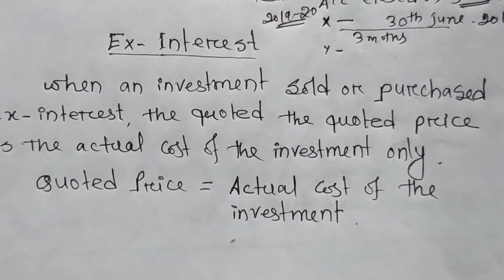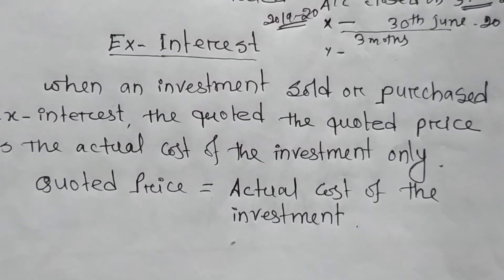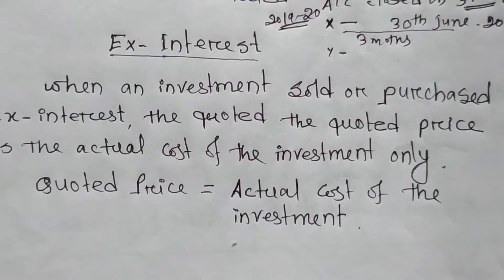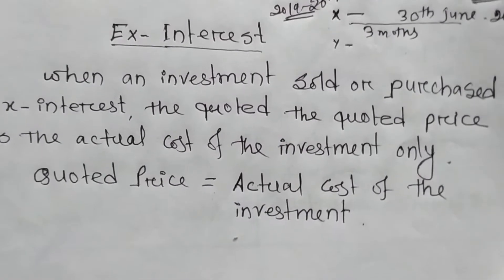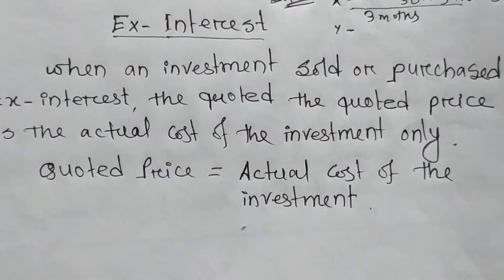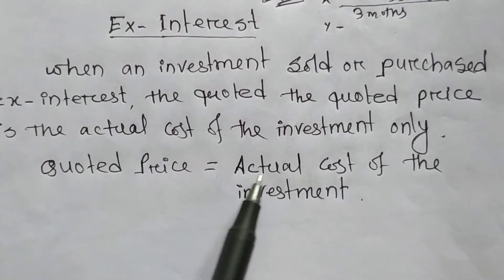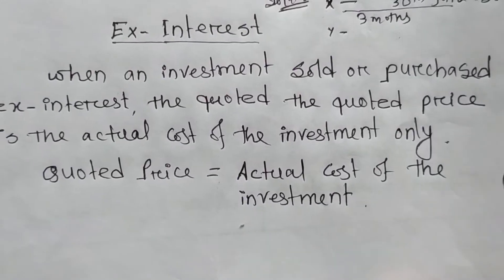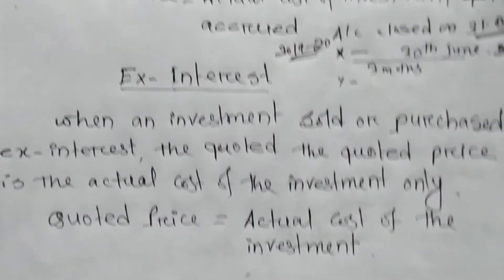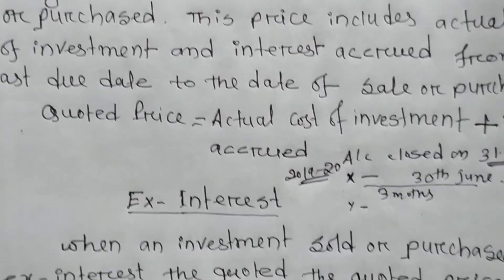An investment which does not include the interest from the last due date to the date of purchase or sale — that is ex interest. In this situation, the quoted price is always equal to the actual cost of the investment. These are the meanings of cum interest and ex interest.